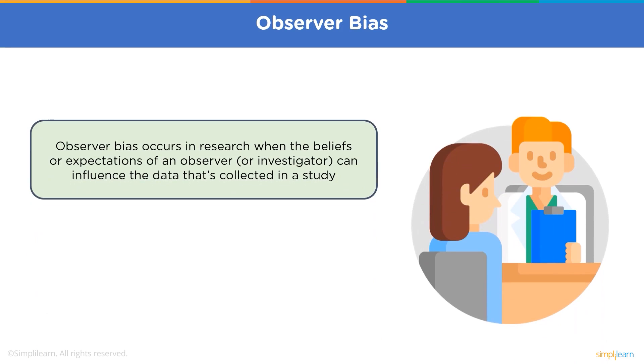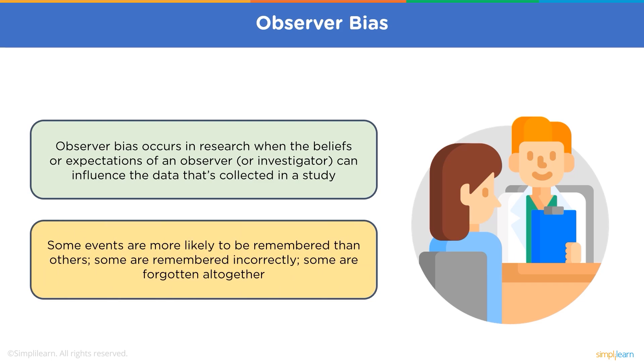Another one is observer bias. When a researcher subconsciously projects their expectation onto the research, this is known as observer bias. In this case, the beliefs or expectation of an observer can influence the data that is collected for the study. Let's try to understand this observer bias with the help of an example. Suppose there is a certain news channel. Now, in the race of TRP, certain news might not be accurate or maybe even false. But to prove his point, he may try to prove that this news is correct and the data that are given are accurate. In this case, the observer, which is the news channel, is trying to force his opinion on the data. And in this case, the observer bias can occur. So with this we have discussed all the types of biases with the help of an example.